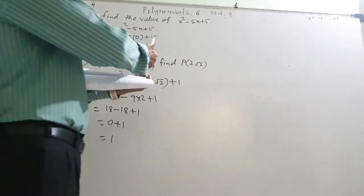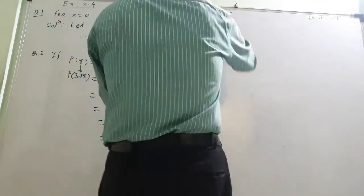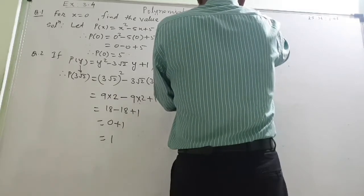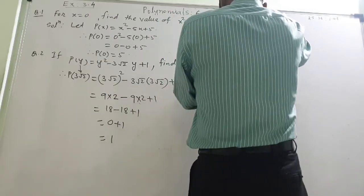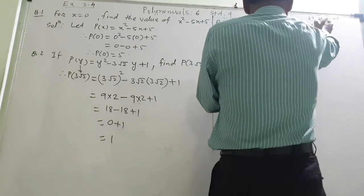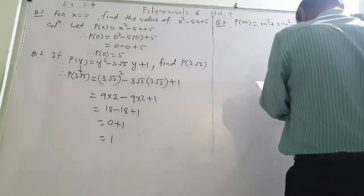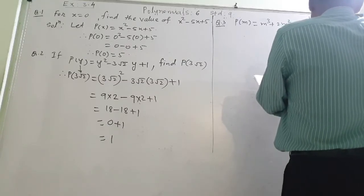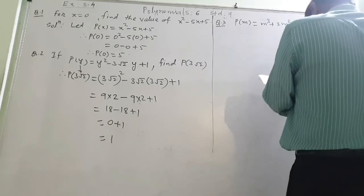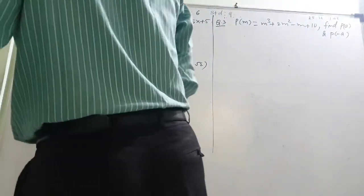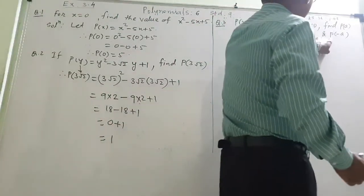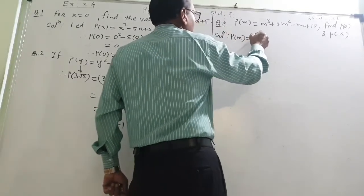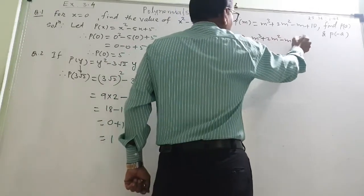Question number 3. p of m is equal to m raised to 3 plus 2m square minus m plus 10. Then find p of a and p of minus a — that is what they want. Solution: p of m equal to m cube plus 2m square minus m plus 10, as written.